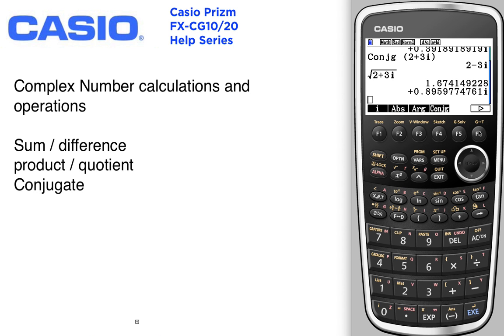Other things you can do: you can find the conjugate, the argument, the absolute value, the real part, the imaginary part. You can change your solution to r in theta, or if you have r in theta, you can change it to a plus b i.